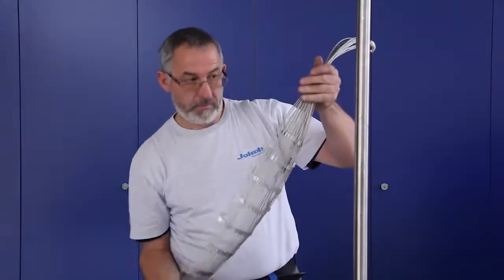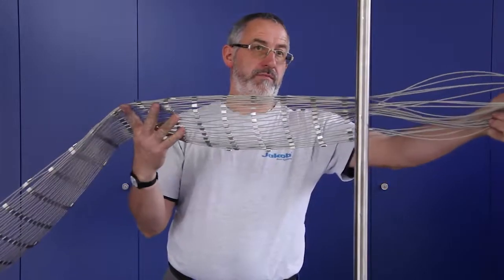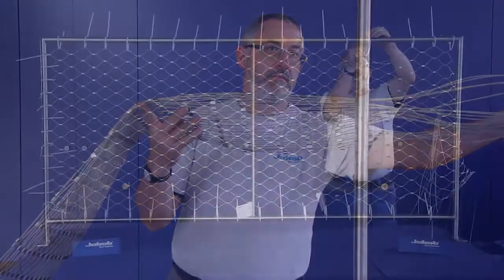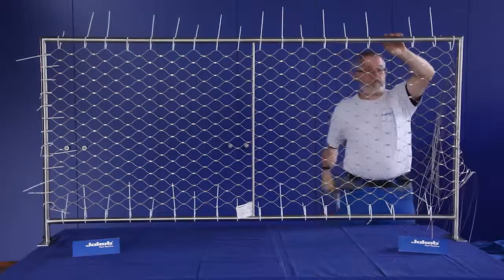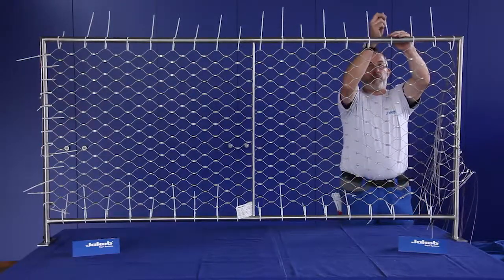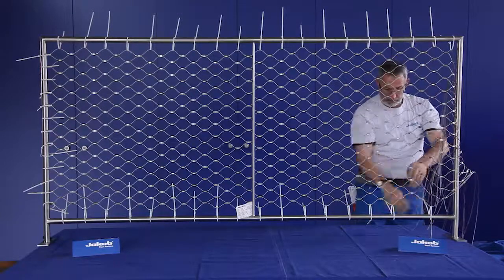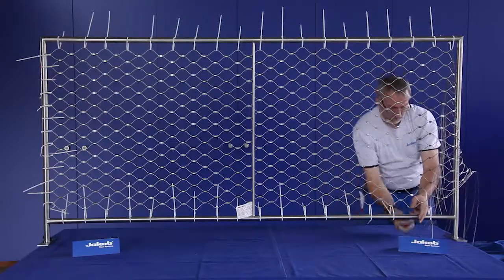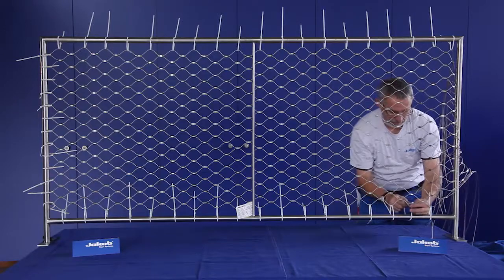If the length of the net is unclear, you'll get the webnet with an unfinished side. Attach the net according to the basic assembly instructions to the frame at the three finished sides with cable ties. It is best to use a cable tie for each diamond.